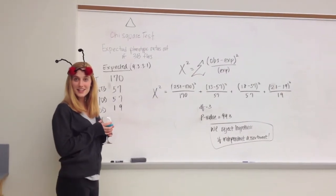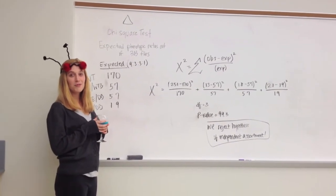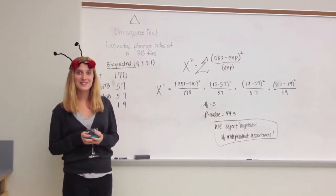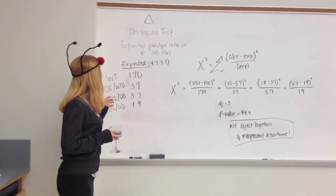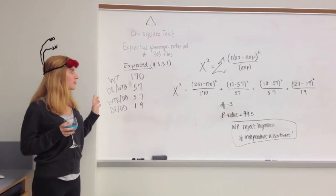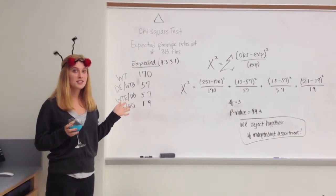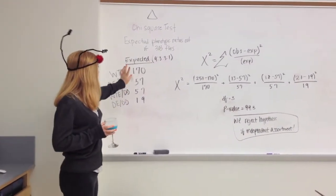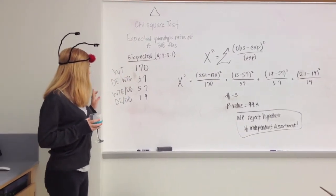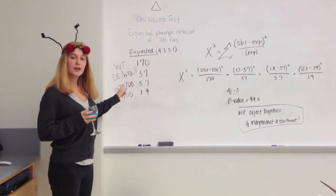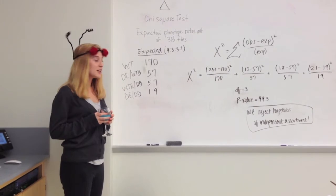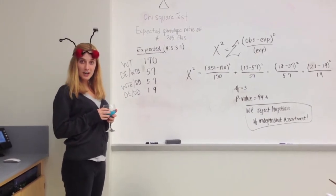Obviously, our data did not fit the 9 to 3 to 3 to 1 ratio, but being scientists, we have to take stuff seriously. So we did a chi-squared test. For our delta cross, our expected phenotypic ratios out of 303 flies in a 9 to 3 to 3 to 1 ratio was 170 flies for wild type, 57 for dark eyes wild type body, 57 for wild type eyes with dark body, and 19 for dark eyes and dark body.